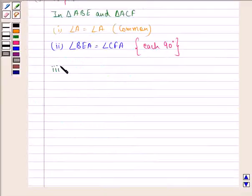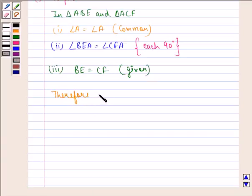Third thing that we see here is BE is equal to CF, that is given. Therefore, triangle ABE is congruent to triangle ACF by AAS congruence rule.